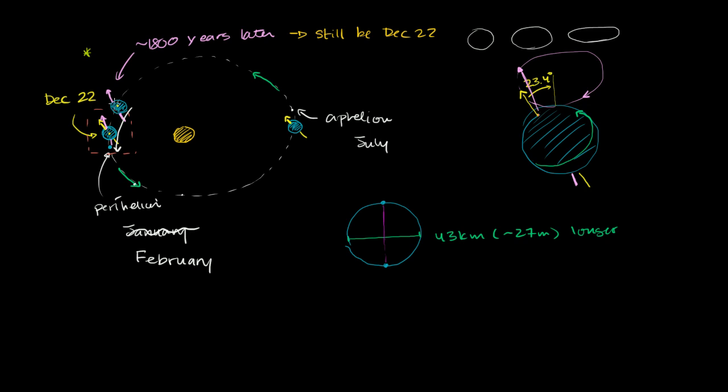From December 22nd or 21st, there are slight fluctuations depending on the calendar, but that will always be the date that we are most pointed away from the sun. That will not necessarily be the date that we are at this exact position relative to the sun itself. And that's why the actual perihelion does change.